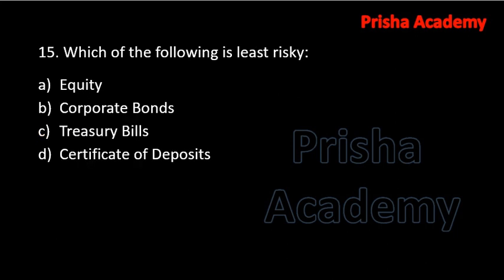Next question: which of the following is least risky? Options are equity, corporate bonds, treasury bills, and certificate of deposits. The answer should be treasury bills, because treasury bills are issued by the government and are therefore the least risky instruments.